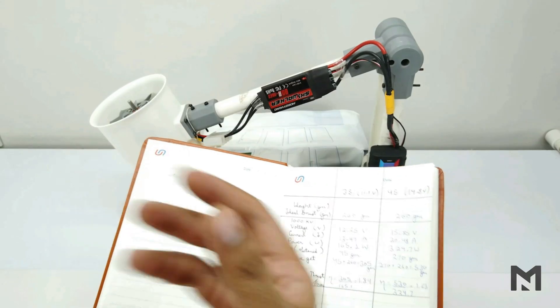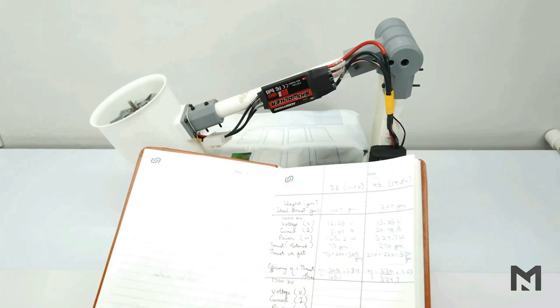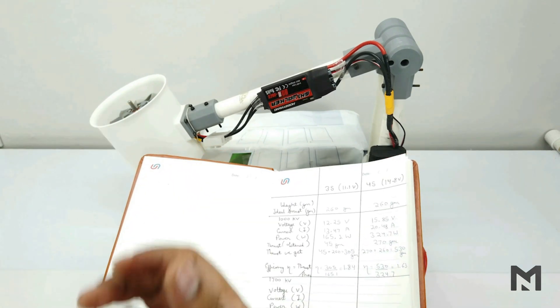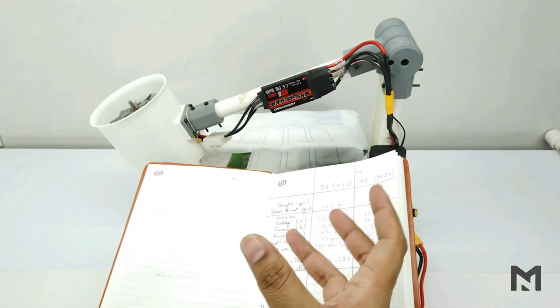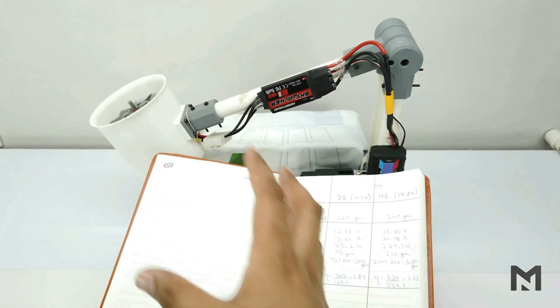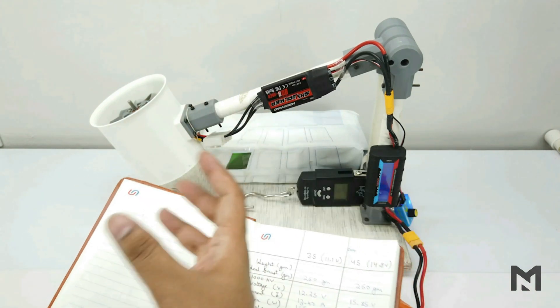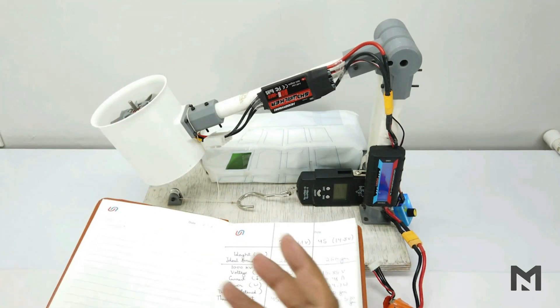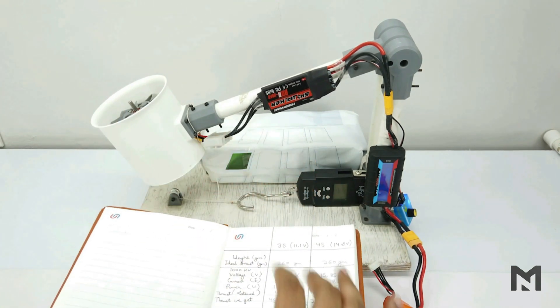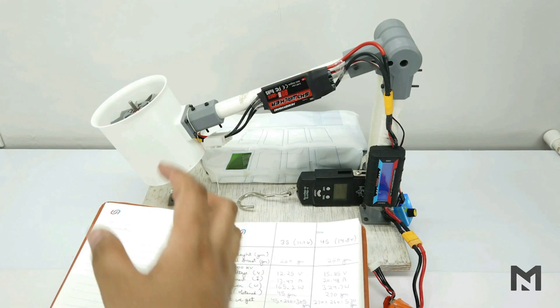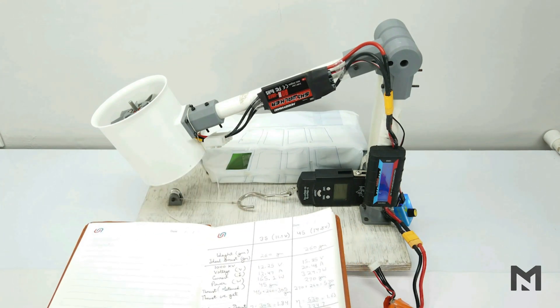So the thrust obtained is very low because the motor we are using is of 1000kV. 1000kV motor has less RPM but high torque. So it is used for two blade propellers of 10 inch or 8 inch. But EDF requires a high RPM or high KV motors. So now we will swap this 1000kV motor with 1700kV motor and then perform the thrust test.